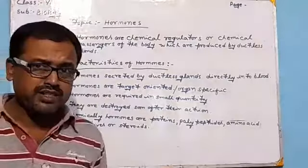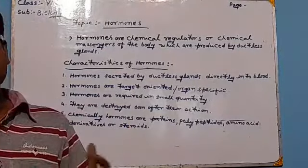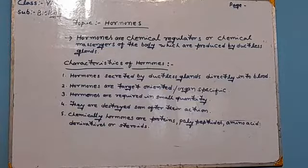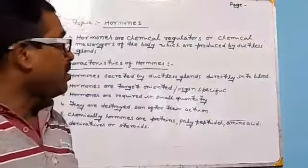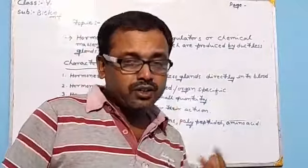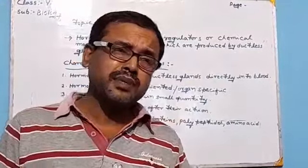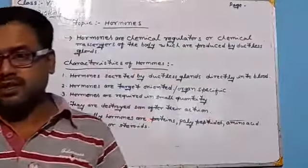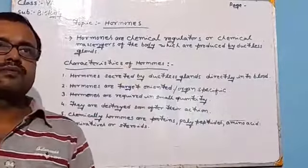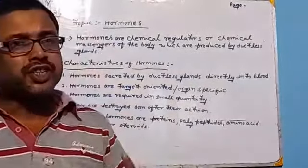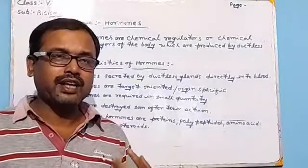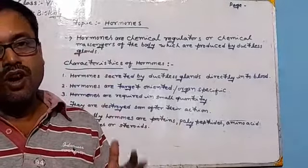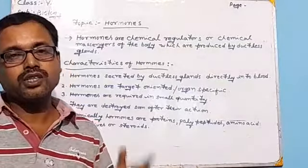Hormones are called chemical messengers because they carry information in the form of chemicals from one part of the body to another. These chemical messengers are secreted by endocrine glands, also called ductless glands, meaning they are directly discharged into the blood, and through blood they circulate throughout our body. When hormones reach their destination or target organ, they activate and act on that organ. Hormones are therefore target-oriented or organ-specific, and the organs acted upon are called target organs.